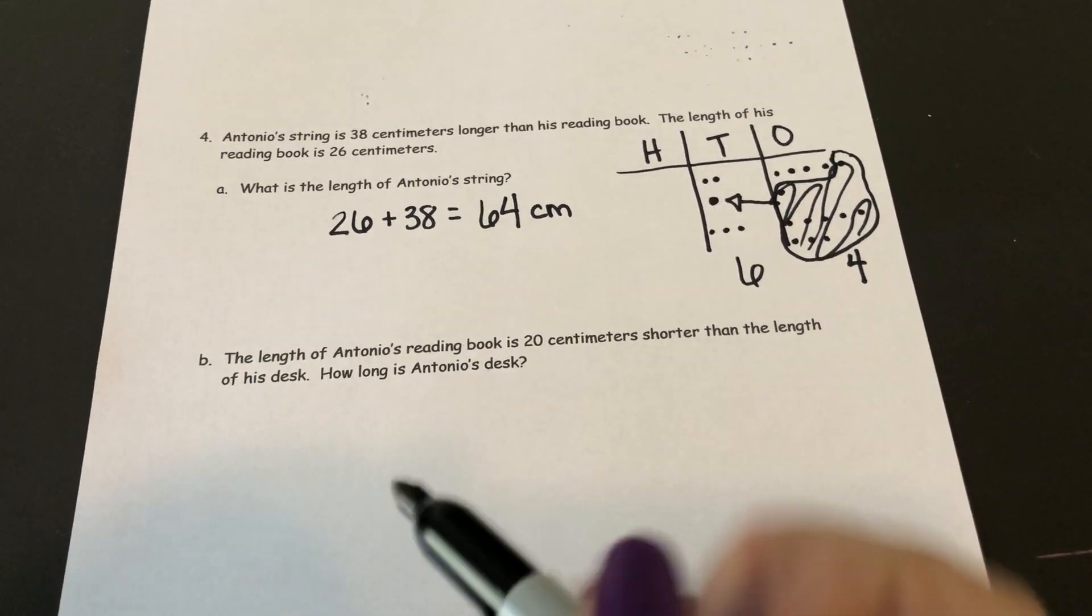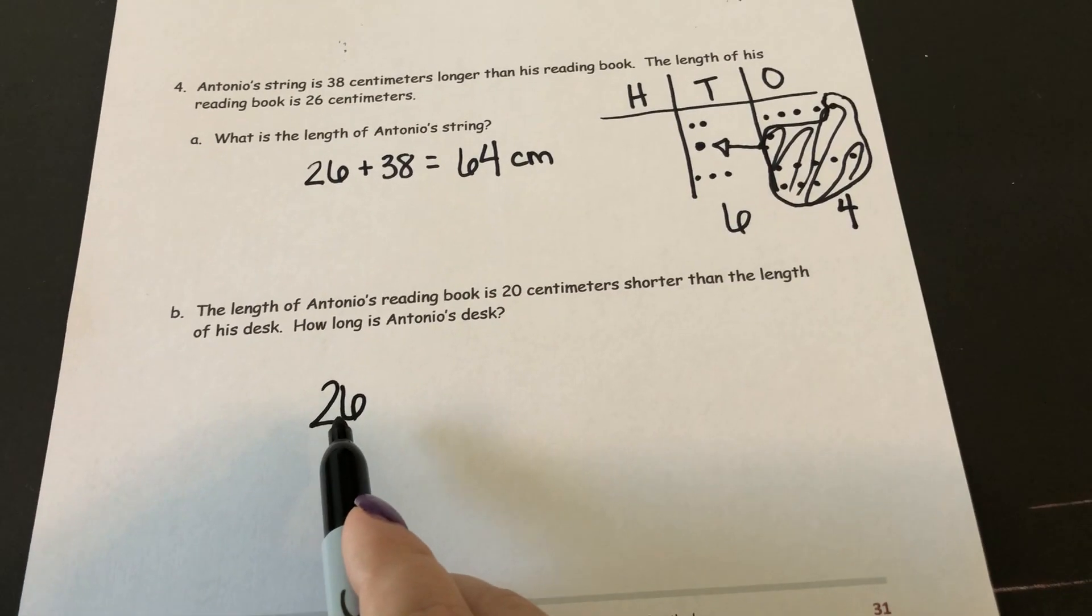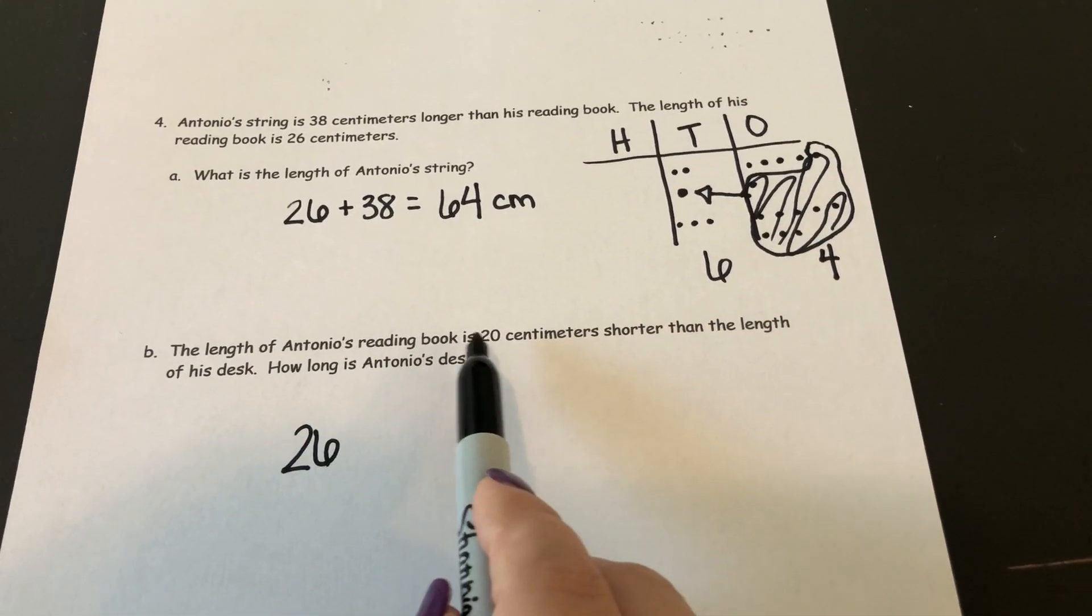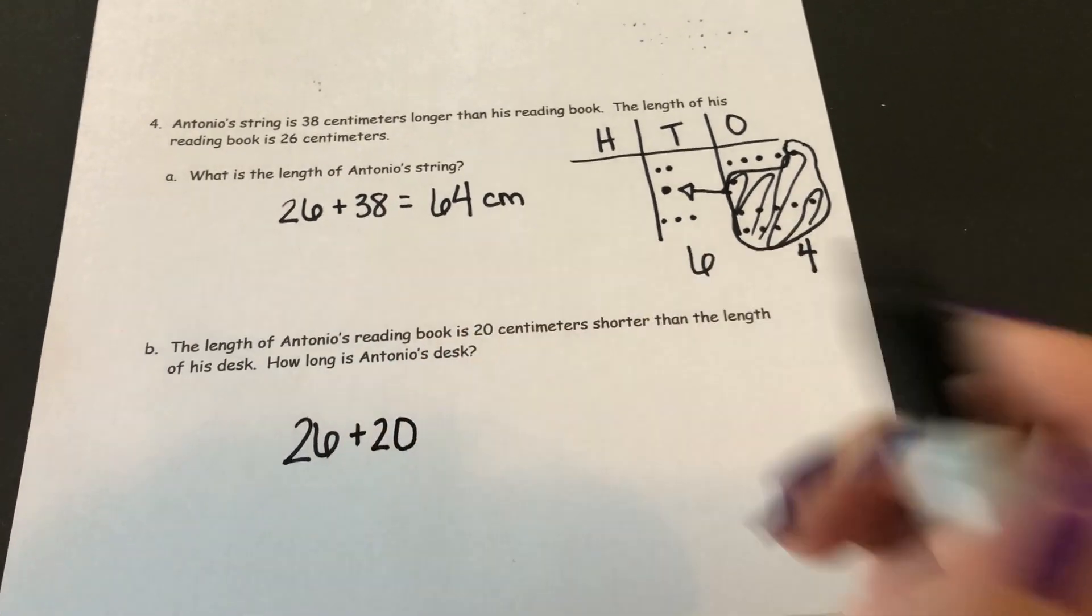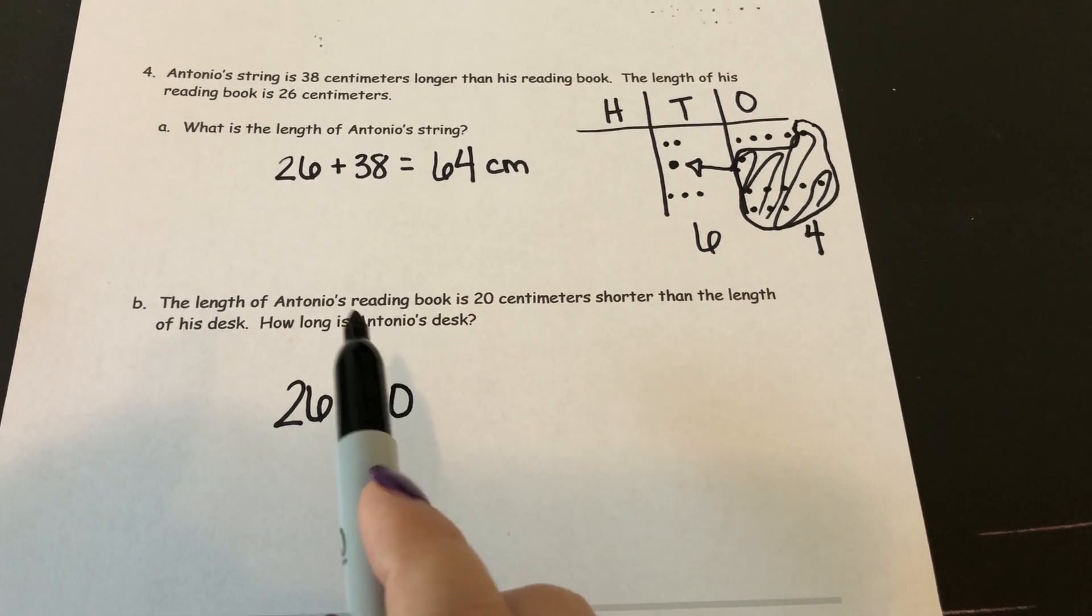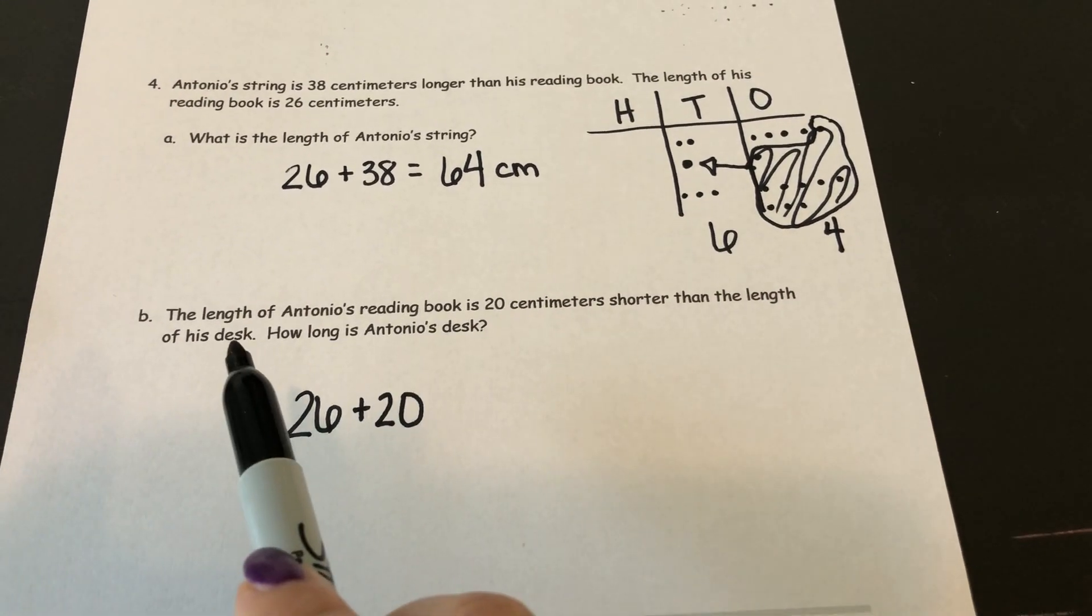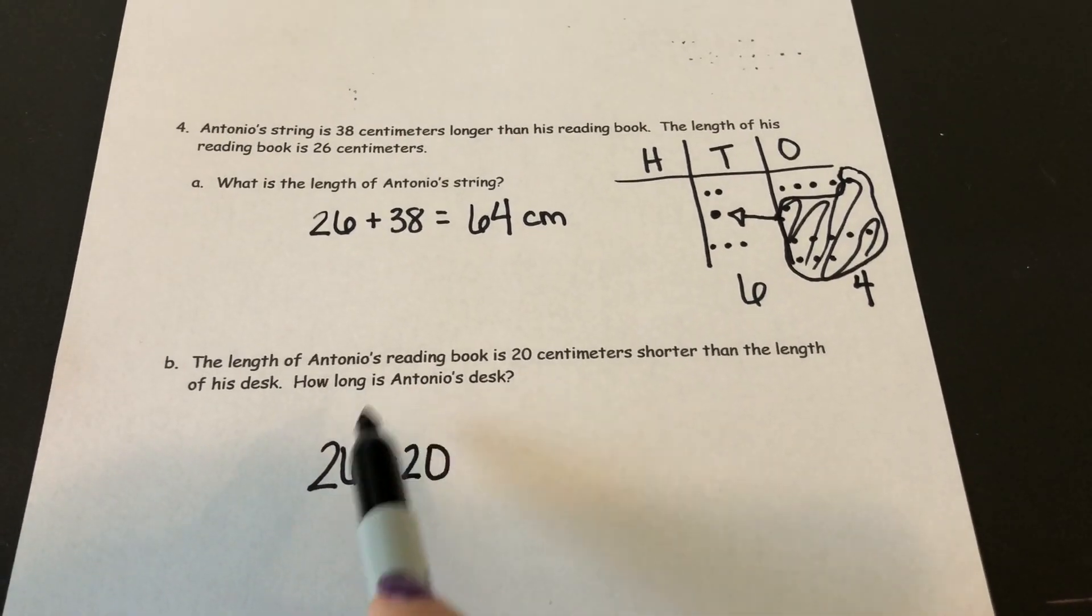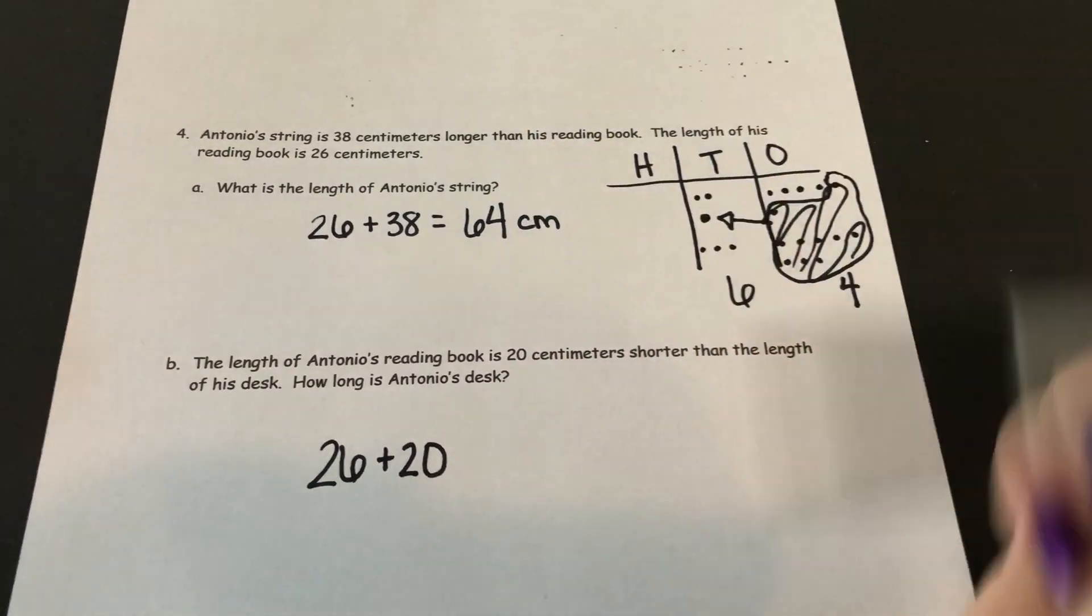So I need to take the length of his reading book, which is 26, and I need to add 20 centimeters back in so I can find out how long his desk is. This one's a little wordy. If his reading book is 20 centimeters shorter than the desk, that means the desk is 20 centimeters longer than the book. That's why we're adding the 20 back in. And we found out up here how long the book was.